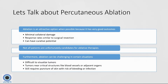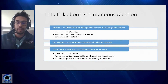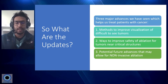Because of this potential curative advantage, we really like to do ablation whenever we can. Unfortunately, not all patients are candidates for ablative therapies. Ablation can be very challenging in certain situations: tumors can be very difficult to see, and if you can't see the tumor you can't take a needle there. Tumors can also be near critical structures like blood vessels or adjacent organs that you don't want to burn or freeze. And it still requires a puncture of the skin, so there's a risk of bleeding or infection since the liver is a very vascular organ.